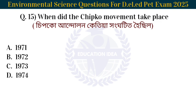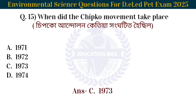Next question: When did the Chipko movement take place? Shipku andulon kitiya hongotit hoi shil. The answer is 1973. The Chipko movement took place in 1973.